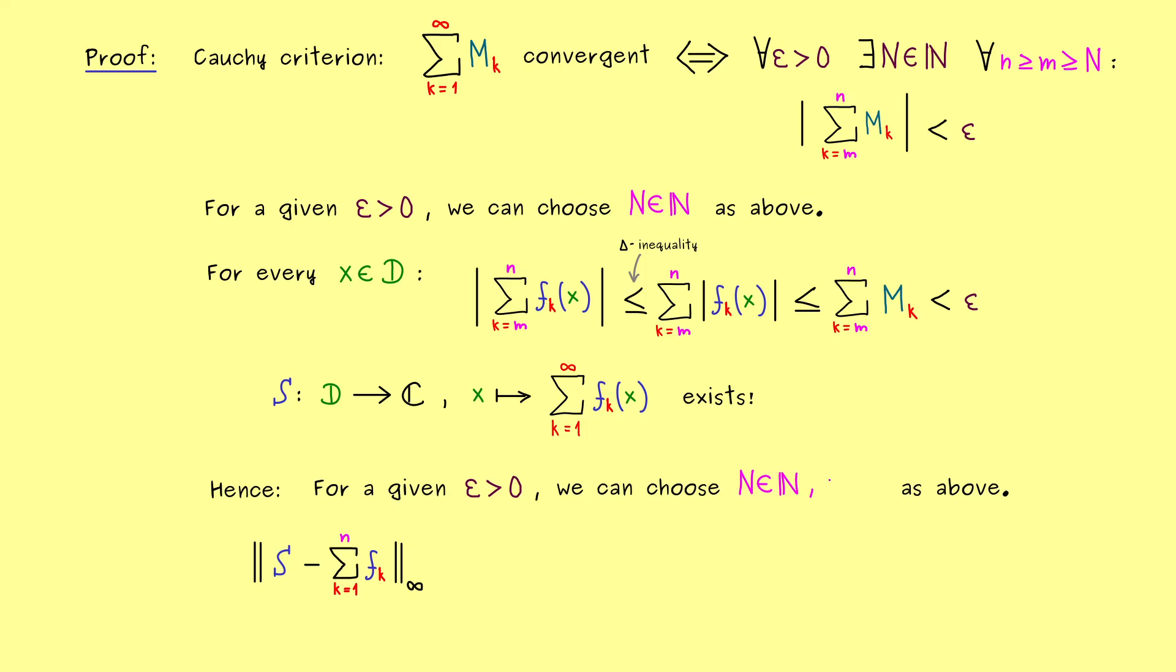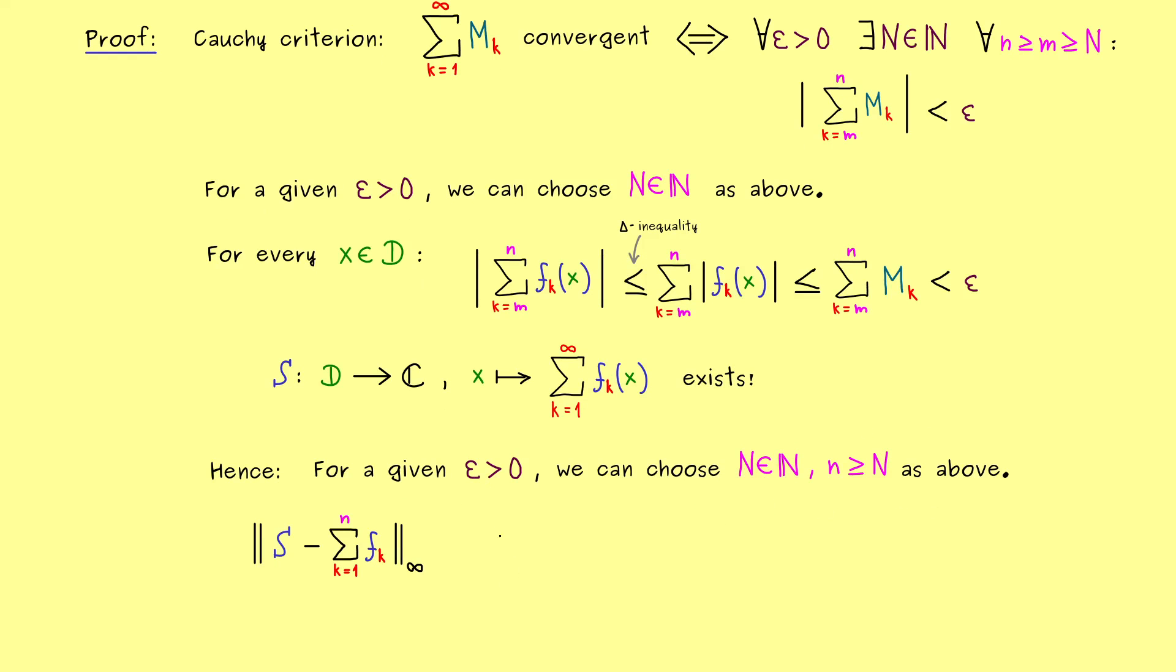And exactly like before, let's fix an epsilon greater 0 and let's choose the corresponding index capital N. And as always, the lowercase n should be greater or equal than this capital N. Now first, as a reminder, the supremum norm is given by the supremum. So instead of the norm, we can just write supremum over x in D. And then we just look at the absolute value of the value of the functions. In other words, we just put in x at the correct positions.